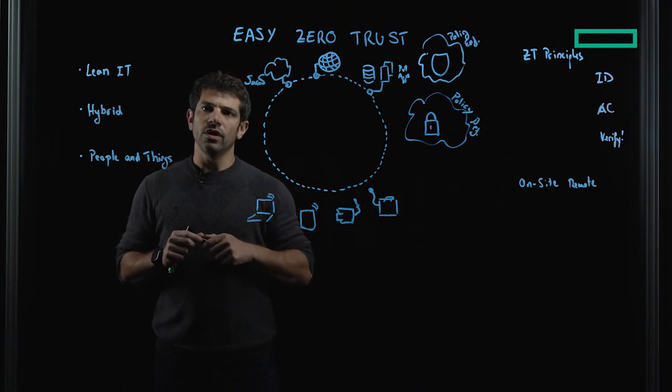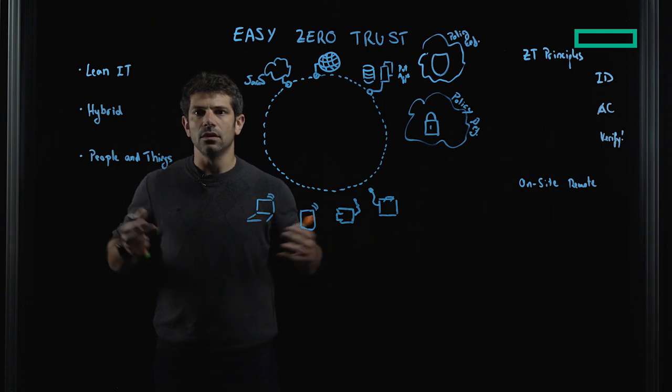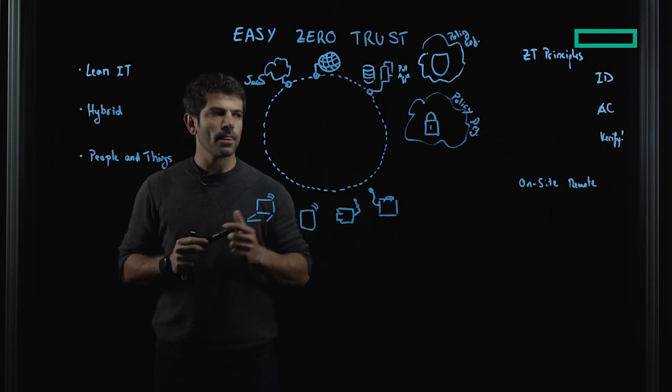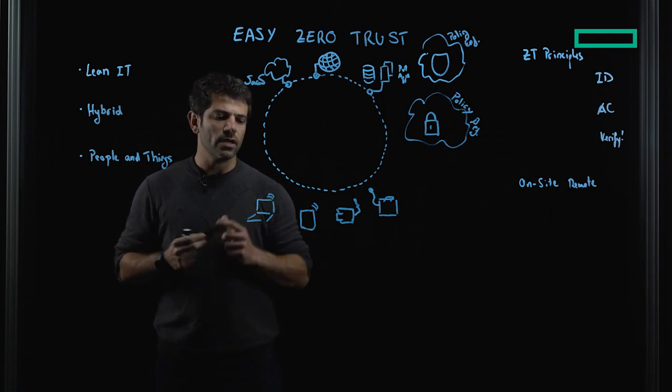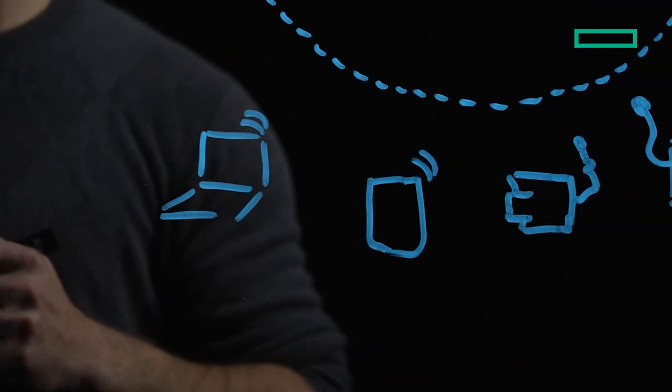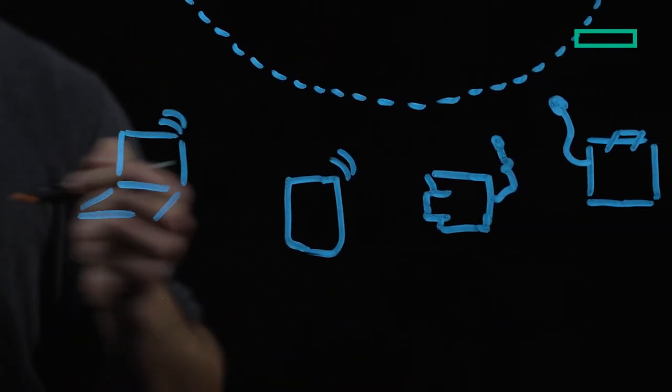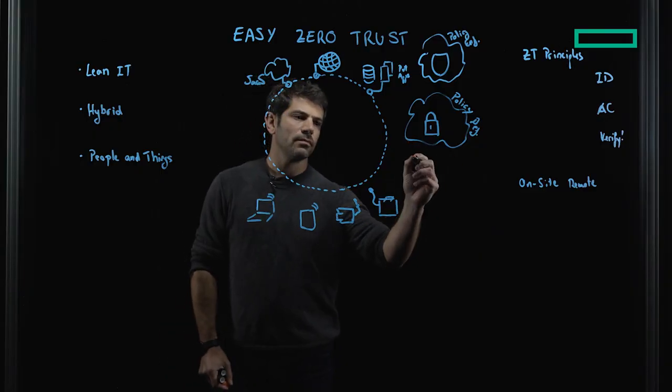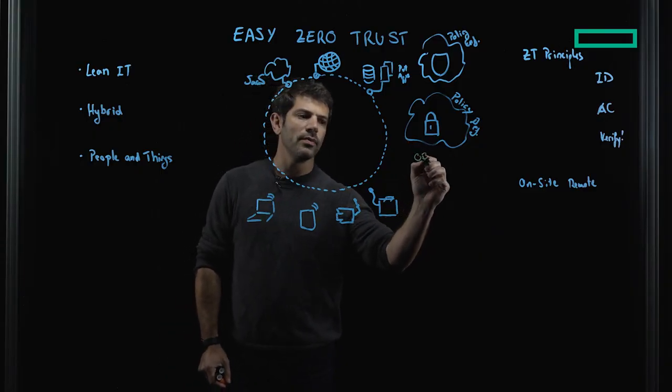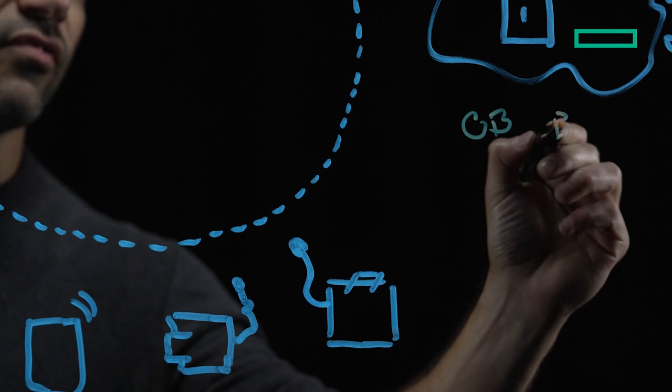So let's start with the beginning - accessing the network, accessing the rest of the resources. First thing that's going to happen, my computers, my tablets, my IoT devices need to access the network. With Aruba Central, we have built-in onboarding capabilities, we have built-in profiling capabilities.